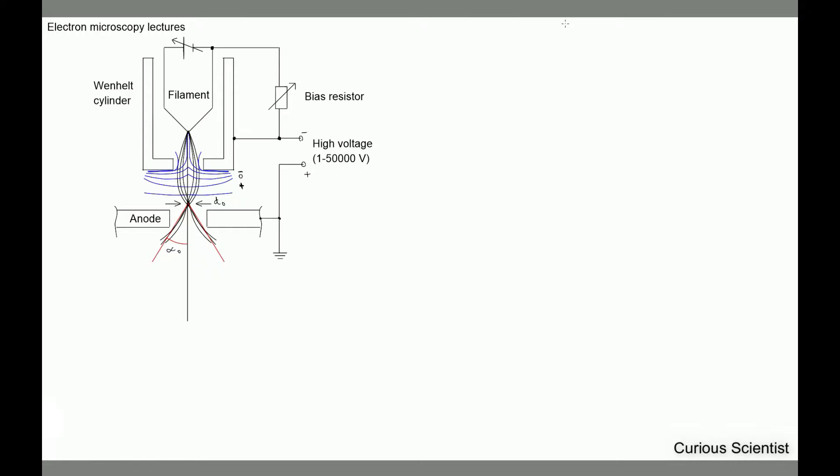Welcome everyone to the third lecture of the electron microscopy lectures. Today I'm going to talk about the first main component of an electron microscope, which is the gun. I already prepared some sort of image, which is basically the structure of the gun. I will explain all the different parts of the drawing during the lecture.